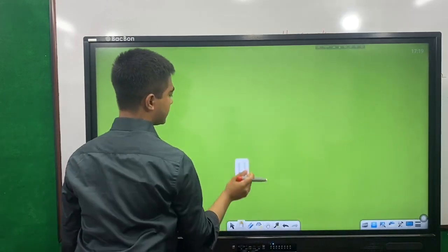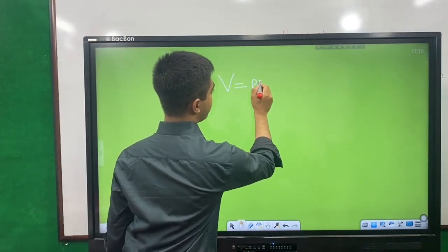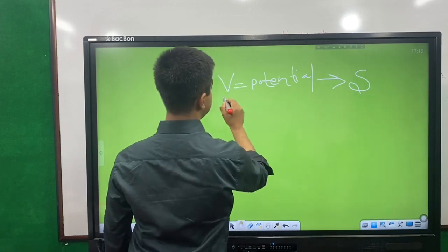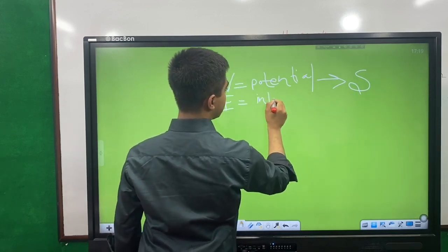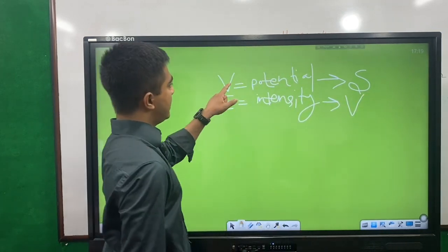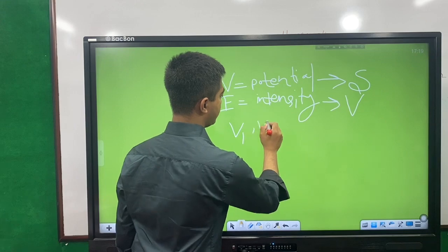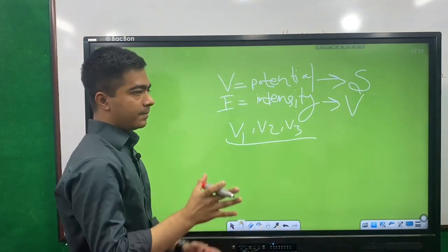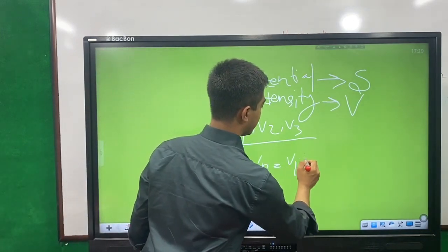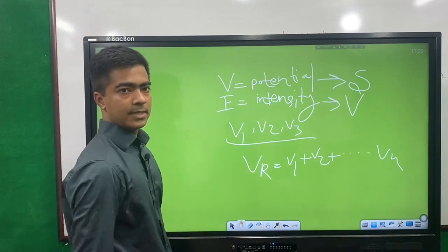Looking at applications of vectors and scalars: electric potential V is a scalar quantity. Electric intensity E is a vector quantity. Because V, as a potential, can be directly added — V1 plus V2 plus Vn equals total V. It is a scalar quantity and can be directly added.